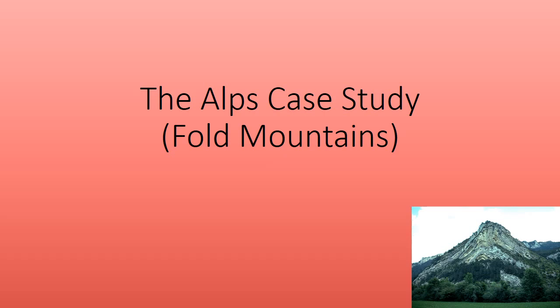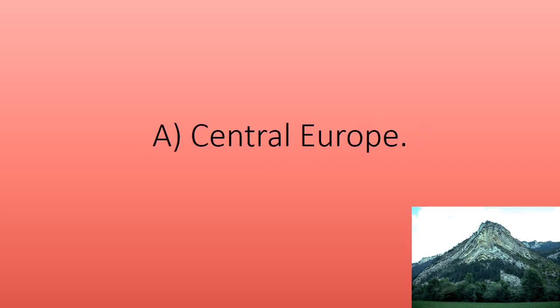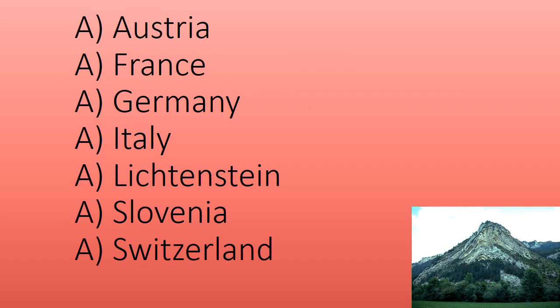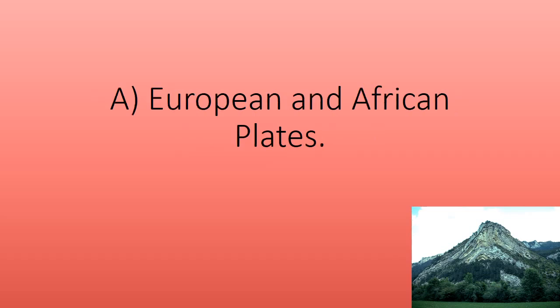The Alps case study — fold mountains. Where is the Alps? What countries does the Alps go through? Austria, France, Germany, Italy. What plates collide to form the Alps? The European and African plates.